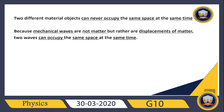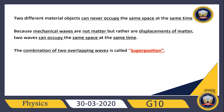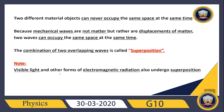As with the example of listening to different musical instruments in a concert, this overlapping between two waves together is called superposition. The combination or mixing of two overlapping waves is called superposition. This superposition is not only applied to mechanical waves — electromagnetic waves like visible light can also undergo superposition. So visible light and other forms of electromagnetic radiation can also undergo superposition. So again, superposition means the combination of two overlapping waves.